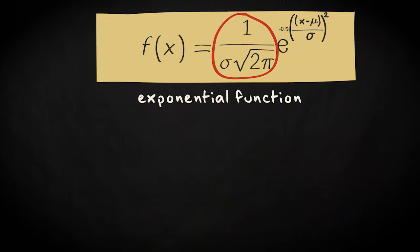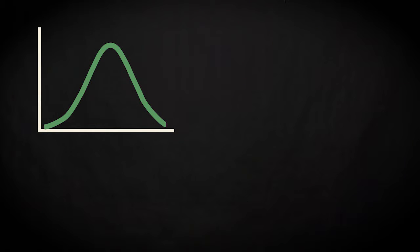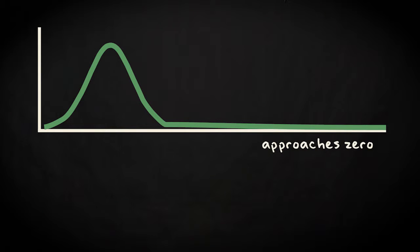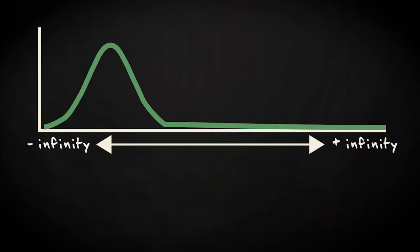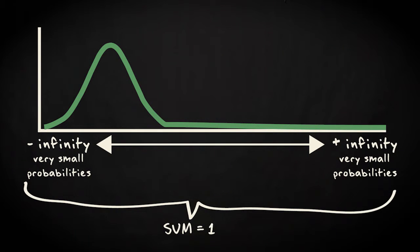A somewhat counterintuitive property of the normal probability density is that it approaches 0 for very large negative or positive values of x, but will never actually be 0. This leads to the fact that the values a random variable can take will stretch from minus to plus infinity. All these values are possible outcomes, albeit with very small probability, but still the sum of all probabilities will be 1.